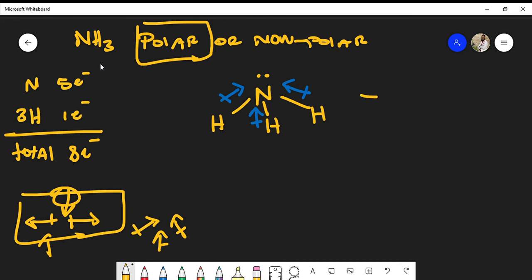The molecular geometry of this is actually trigonal pyramidal. And trigonal pyramidal happens to be asymmetrical, and this is another additional reason why the molecule is polar.